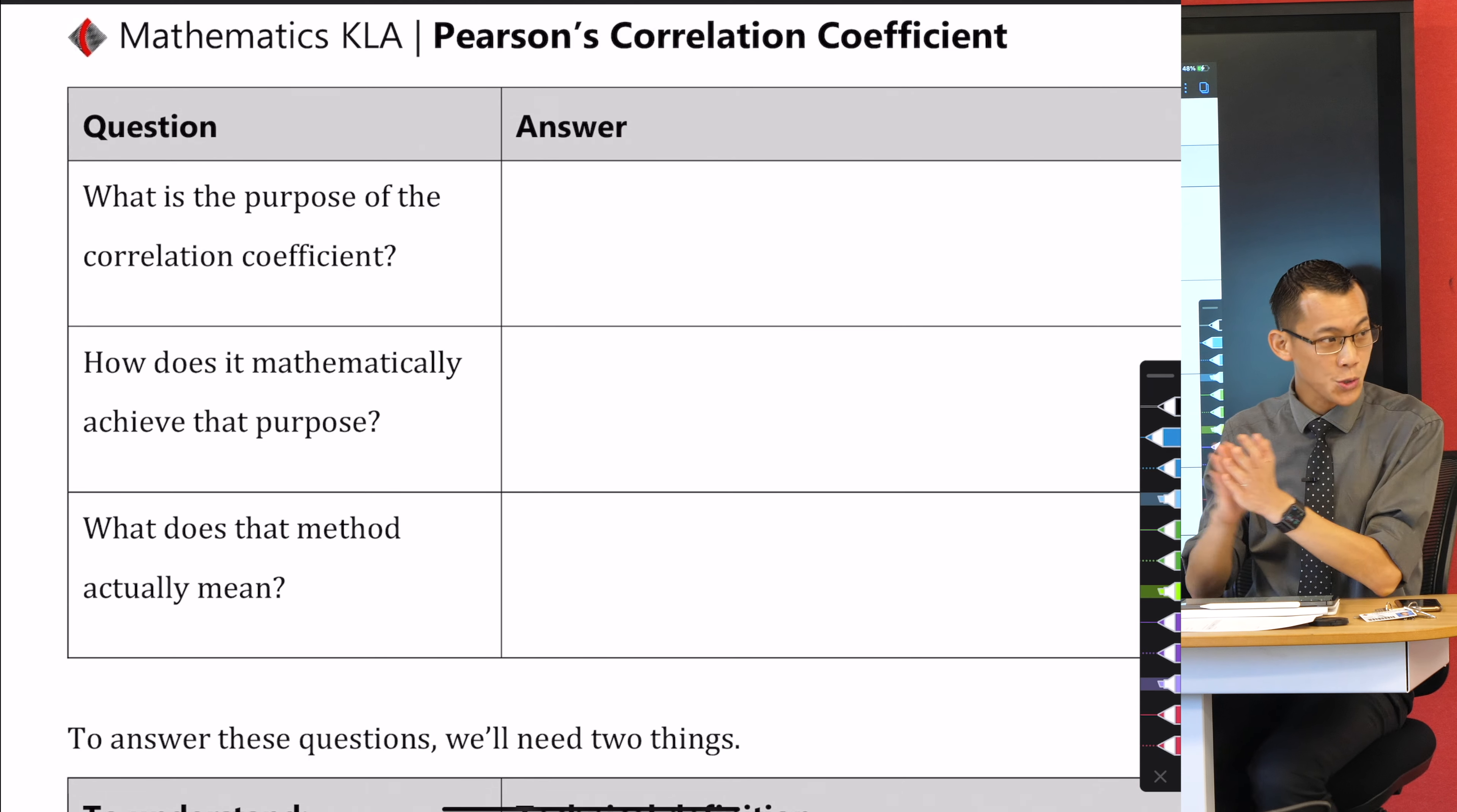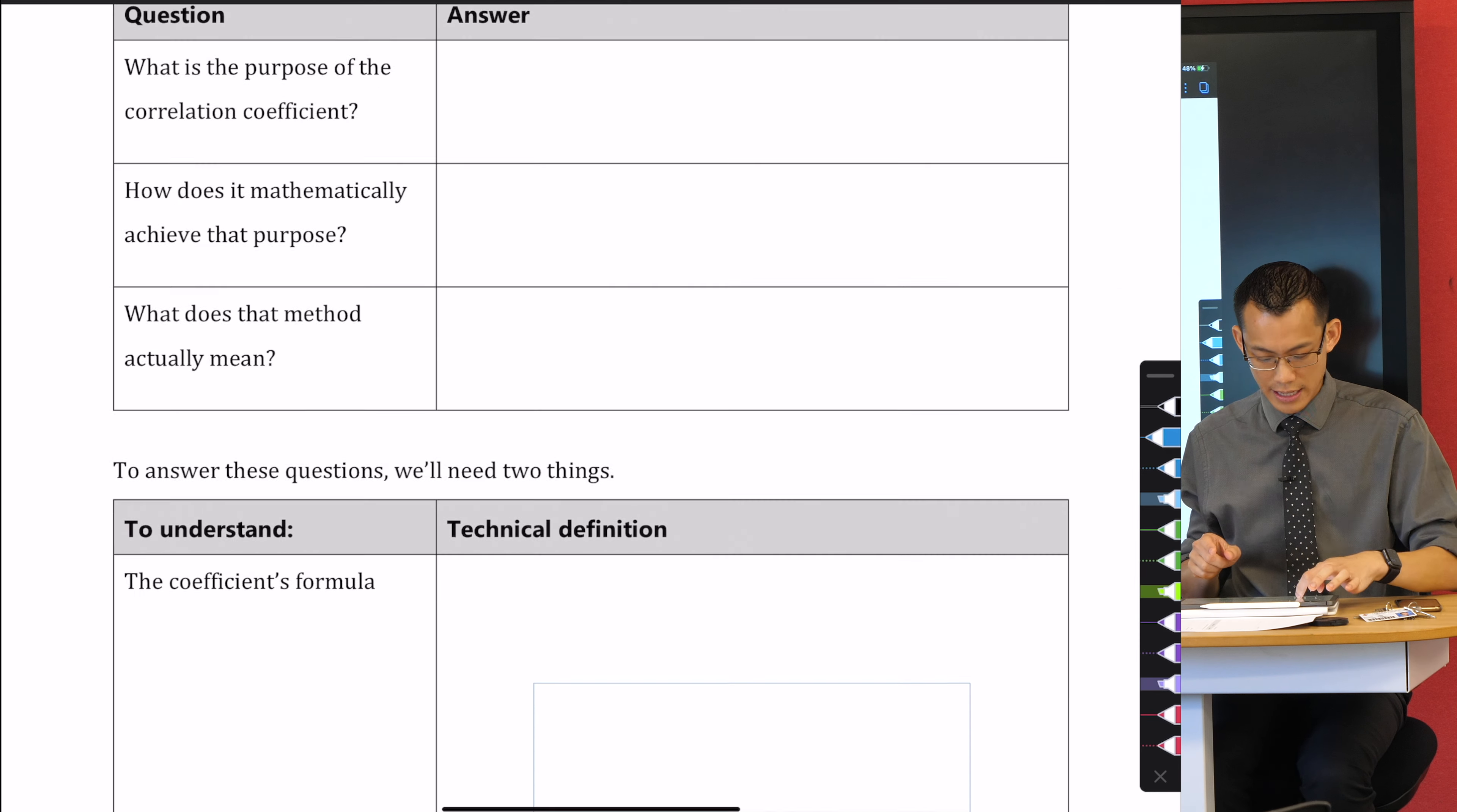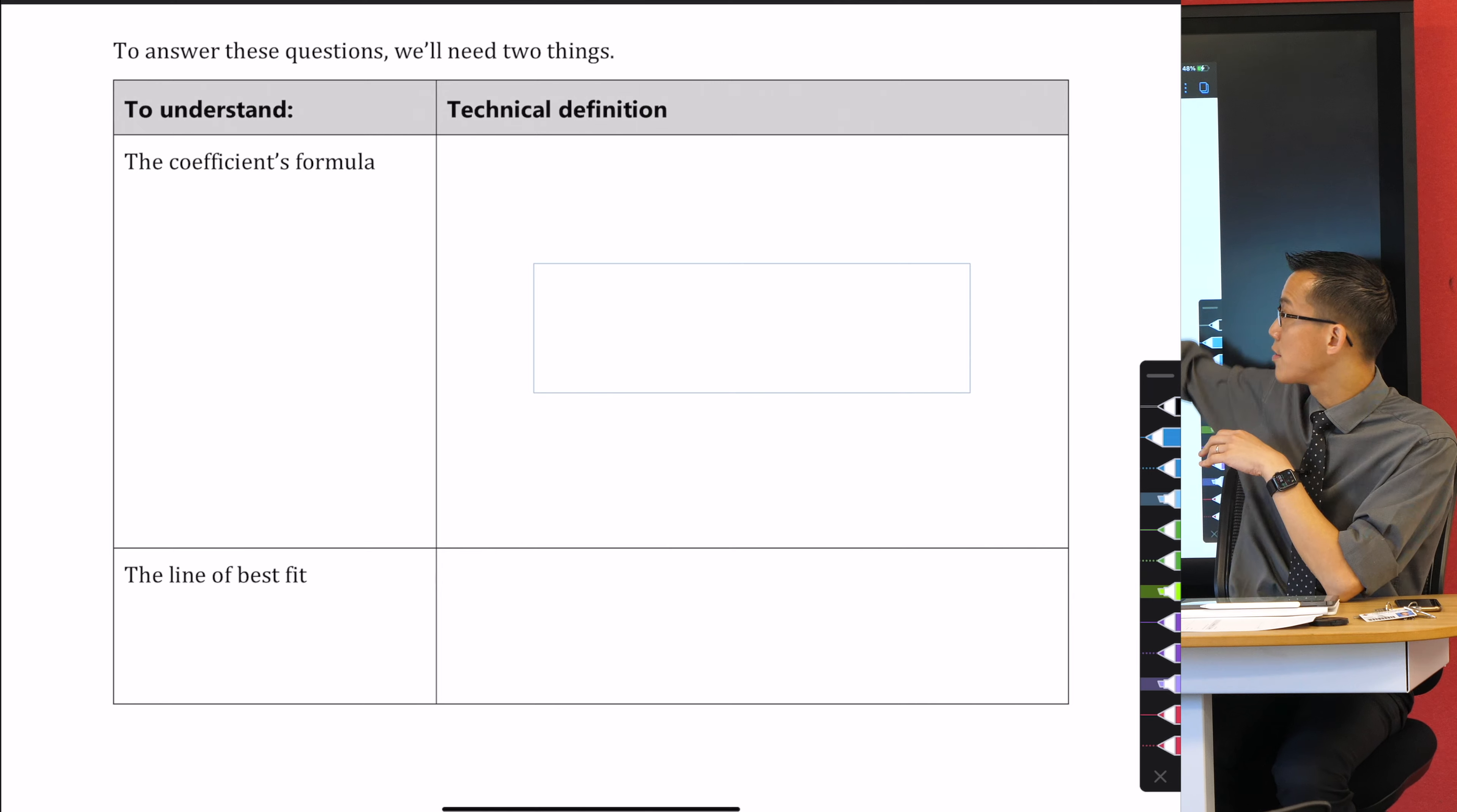By the end of this—I don't know, it might take about 15 minutes, we'll see how we go—these are the things I want you to be able to answer successfully. As you can see down below in the second half of this page, to answer these questions, those three, we need two different objects.